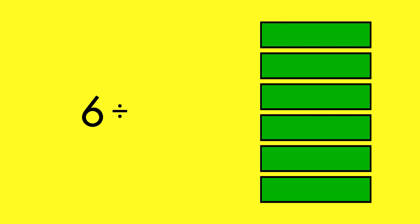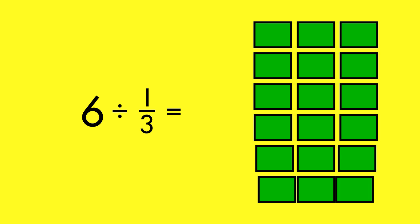When you divide a whole number such as six by a unit fraction such as one-third, you are increasing the number of wholes. By dividing each of six wholes into thirds, you get eighteen thirds. Six divided by one-third is eighteen.